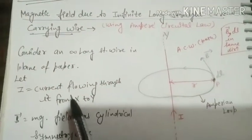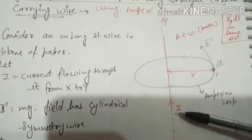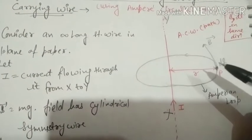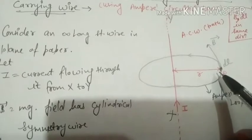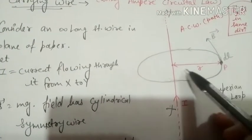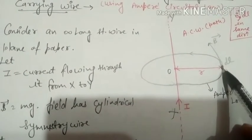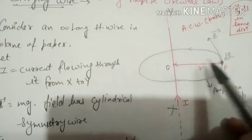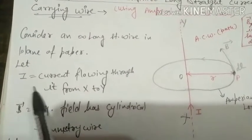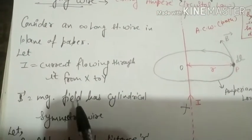We have a wire whose length is infinite, and suppose that current I flows from x to y. There is a point P where we have to study the magnetic field. We have to take the distance from its central point. Consider an infinite long wire in the plane of paper. Let current I flow from x to y. The magnetic field has cylindrical symmetry.